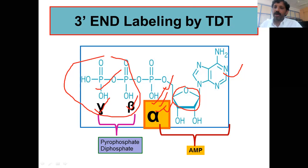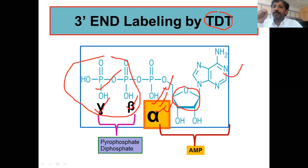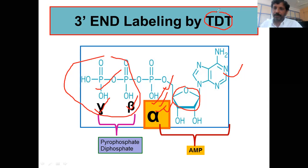The other important component is Terminal Deoxynucleotidyl Transferase (TdT). This enzyme has the ability to incorporate nucleotides at the three prime end in a template-independent manner. So alpha-phosphate-labeled ATP and TdT are both important for three prime end labeling. In the next slide we'll see the procedure.